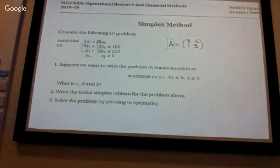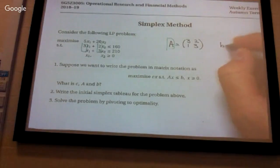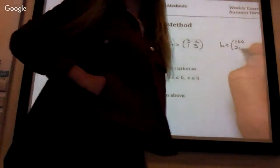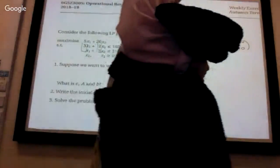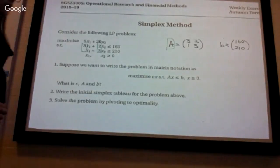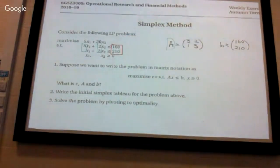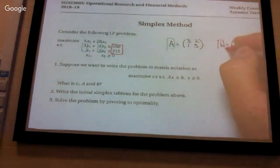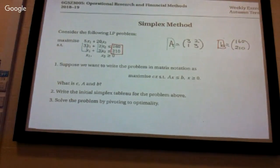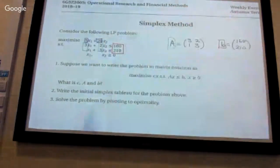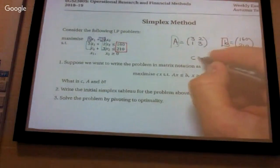And then what is b? So b is the right-hand side. I'm going to spare you more questions. That's the b. And then c is the remaining — this is the 5 and 20, so c is 5 and 20.